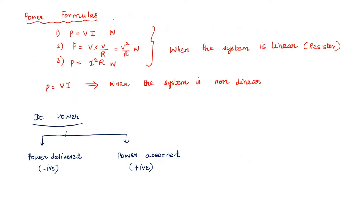Next, I am going to explain the formulas for power. There are three different formulas. The first one is P = V × I. From Ohm's law, I = V/R, so substituting gives P = V²/R. The third formula is P = I²R, obtained by substituting V = I × R. These three formulas are applicable when the system is linear.